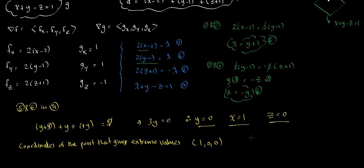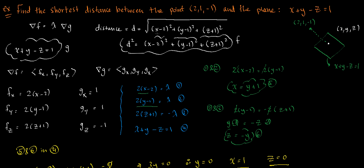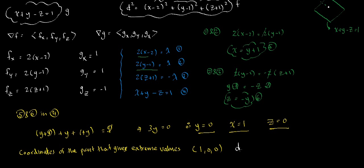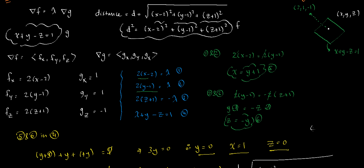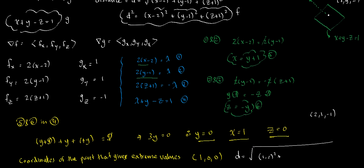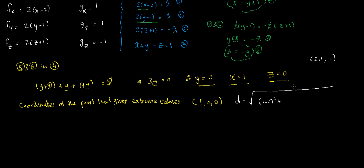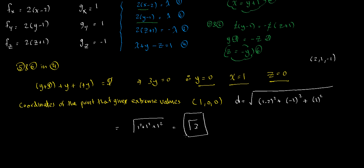Now that we've found the point, we substitute it into the distance equation to find the shortest distance. The original point was (2, 1, negative 1) and the point we found is (1, 0, 0). So the distance equals the square root of (1 minus 2) squared plus (0 minus 1) squared plus (0 minus negative 1) squared, which is the square root of 1 plus 1 plus 1, which is the square root of 3. And that is the final answer.